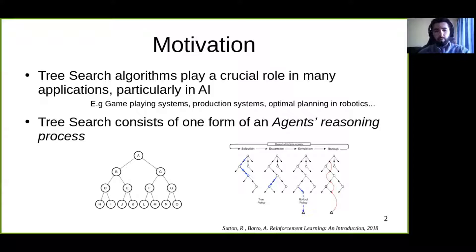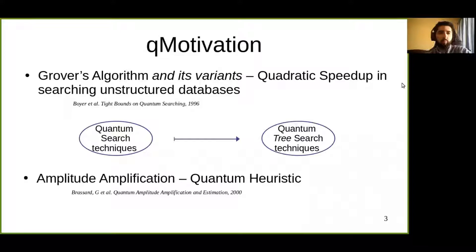At the bottom you see a simple binary TreeSearch, and at the bottom right you could see a different TreeSearch algorithm. It is called Monte Carlo TreeSearch algorithm, and it is widely used in reinforcement learning applications. What about the quantum motivation? We all know that Grover's algorithm can give us a quadratic speed-up in searching unstructured databases, and so if we could map quantum search techniques, Grover's algorithm and all of its variants, into a quantum TreeSearch technique, maybe we could enhance some of the TreeSearch algorithms.